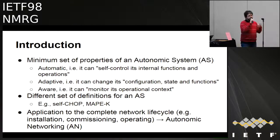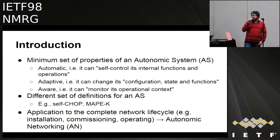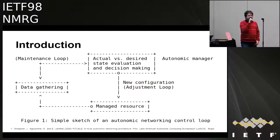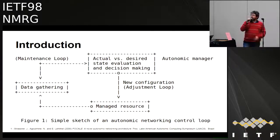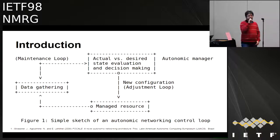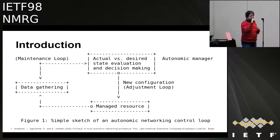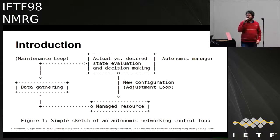For example, we can talk about the installation, commissioning, operating, monitoring, and similar jobs in network operation. As adaptation is necessary in an Autonomic Networking System, a closed-loop control is typically used. This is a simple sketch from the FOCAO system, an influential Autonomic Networking Management System. It has two components: the Autonomic Manager, which collects information and acts by changing configuration, and the Managed Resource, which provides information to the manager.